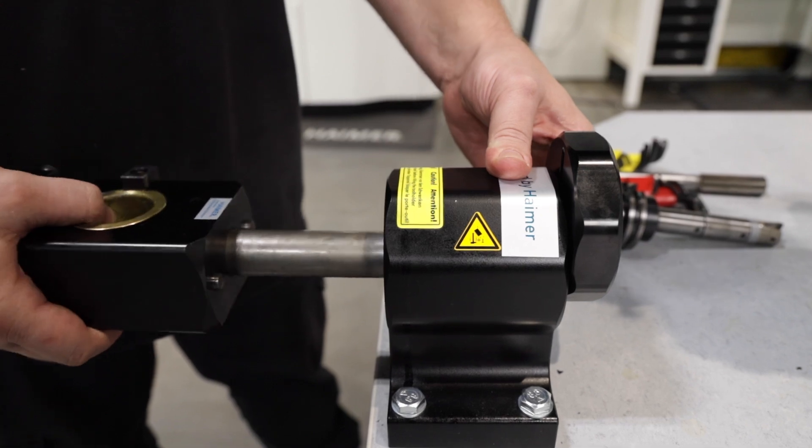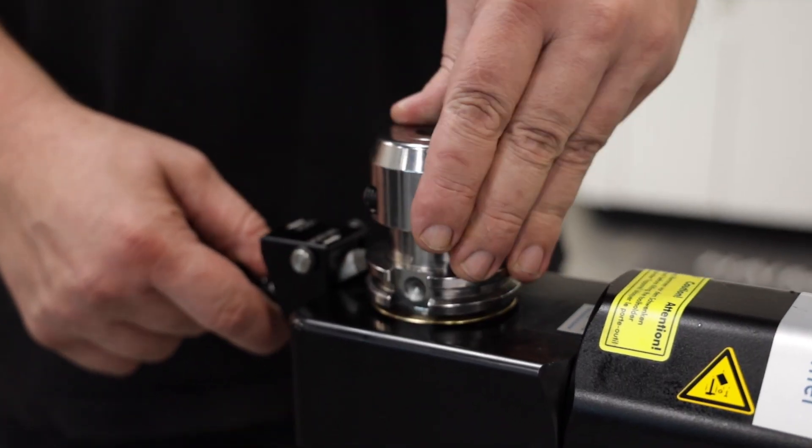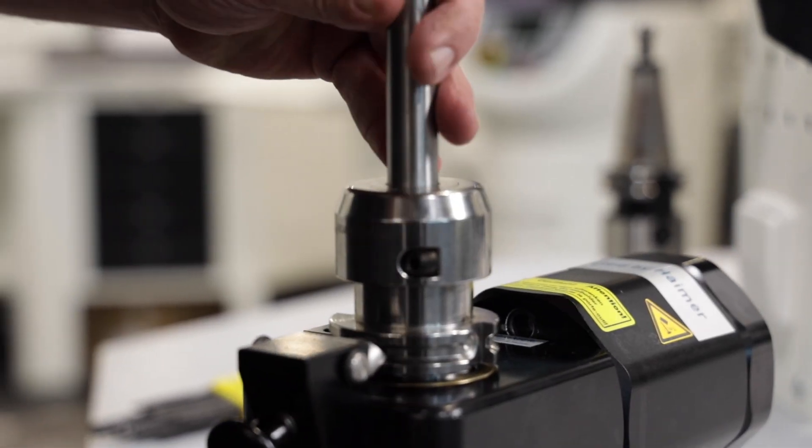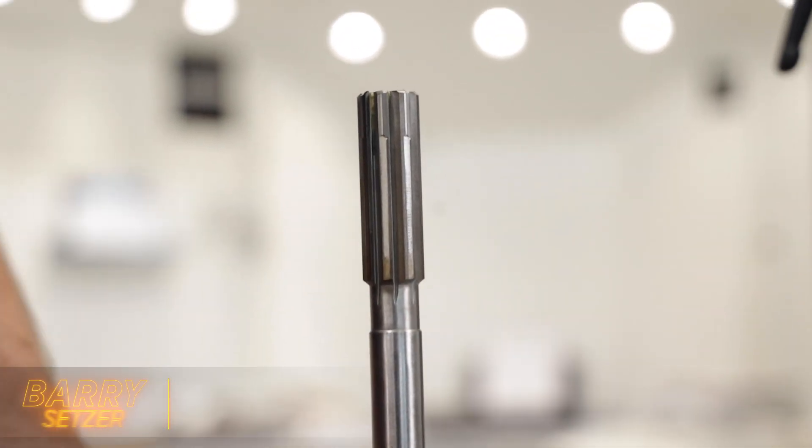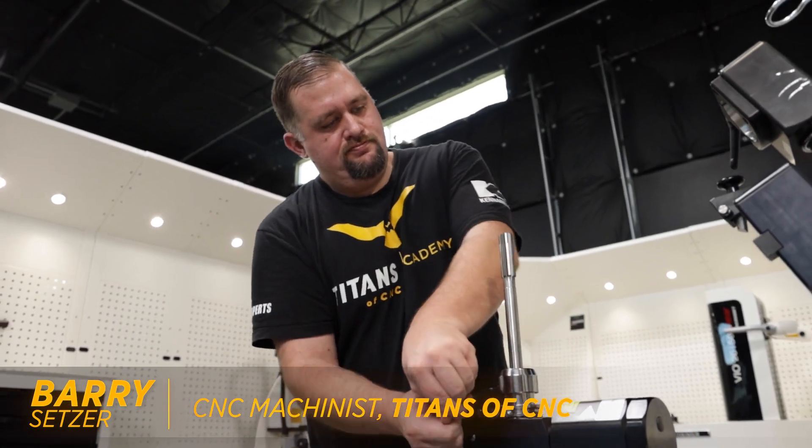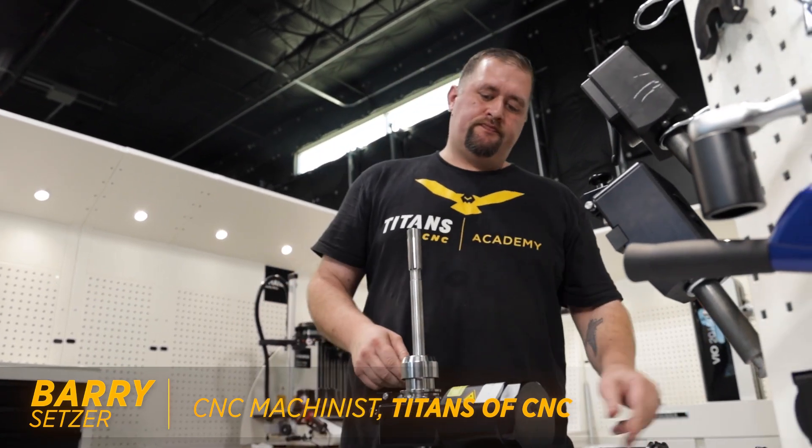There are tons of tools that can be used to make a precision hole and we can't cover them all. But some of the more common tools are reamers and boring heads, and there are a lot of variations within these two groups. Both of these types of tools are used to enlarge a pre-existing drilled hole and improve the surface finish of that hole.